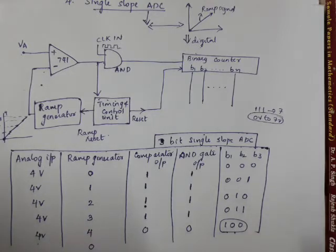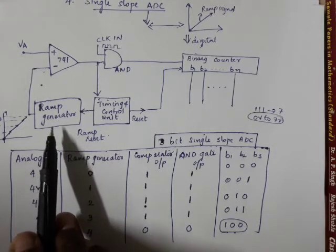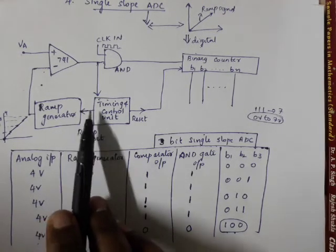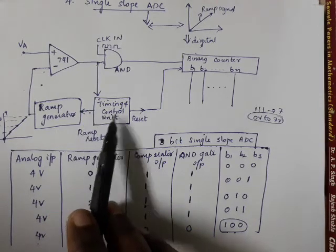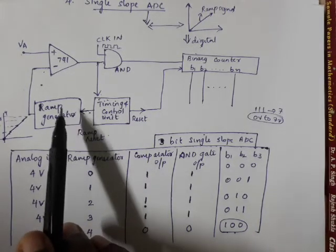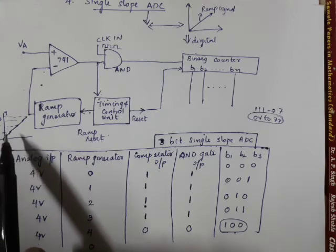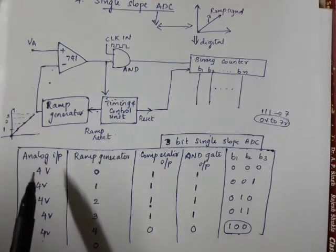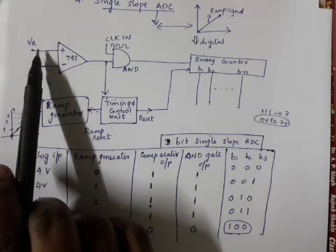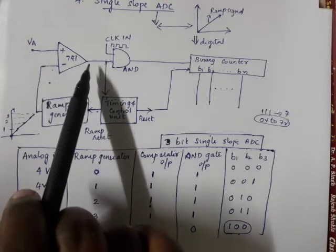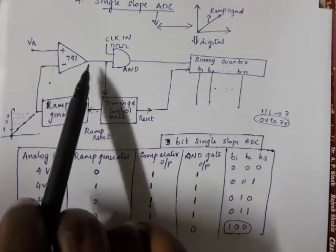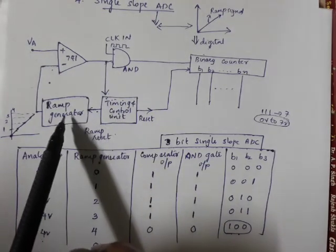This is the Single Slope ADC. The ramp generator is controlled by the timing and control unit. The ramp generator produces voltage incrementally — 1V, 2V, and so on. Once the ramp voltage equals the input voltage, the difference becomes zero, the comparator output goes to zero, and the ramp generator stops.